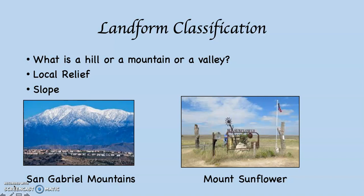They rise almost directly up out of the earth. That means if you came from, for example, the Himalayas, which are almost three times higher than the San Gabriel Mountains, and you looked at the San Gabriel Mountains from Southern California, you would probably refer to them as mountains even though they're not as high as the Himalayas, because they are so steep.